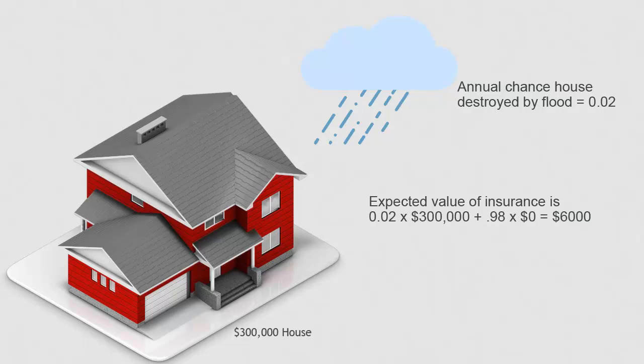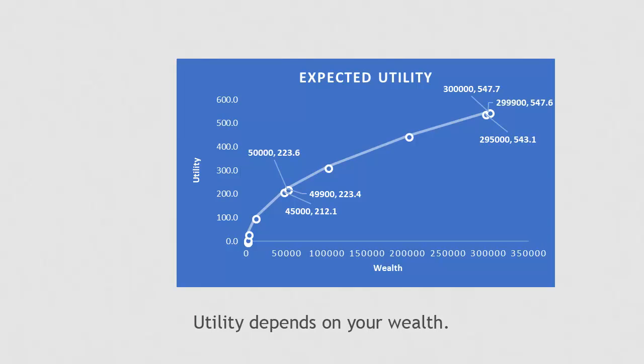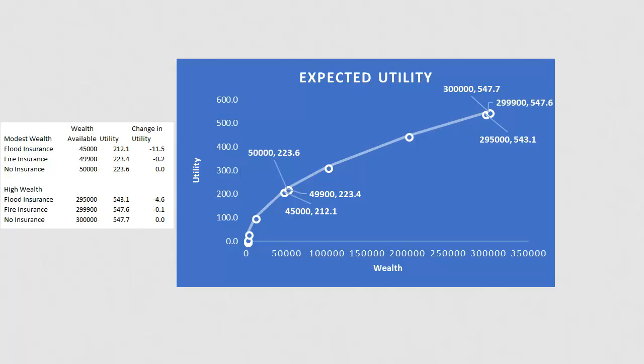Suppose flood insurance costs $5,000 per year. Will you buy? If you are wealthy, this may be worthwhile. Notice that utility decreases 4.7 points from $547.7 to $543.1. If you're not wealthy, paying $5,000 has a larger negative impact on your utility, reducing it 11.5 points from $223.6 to $212.1. That may be enough of a difference to make you say no to flood insurance, even though paying $5,000 for an expected return of $6,000 is worthwhile from an expected value perspective.